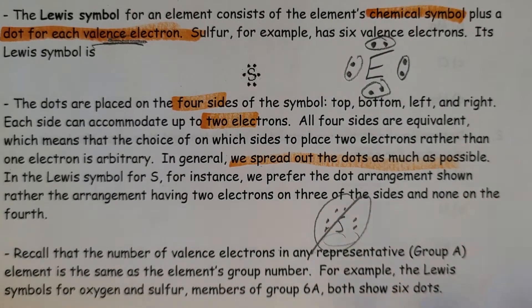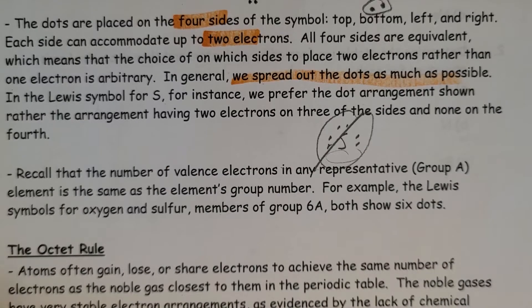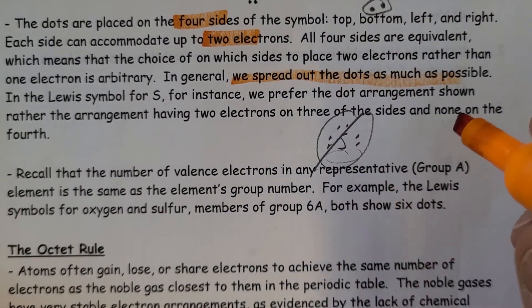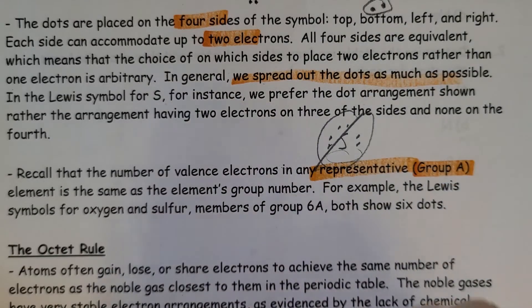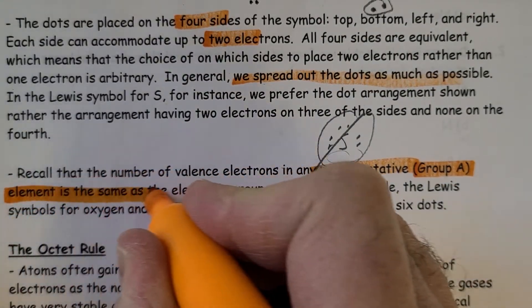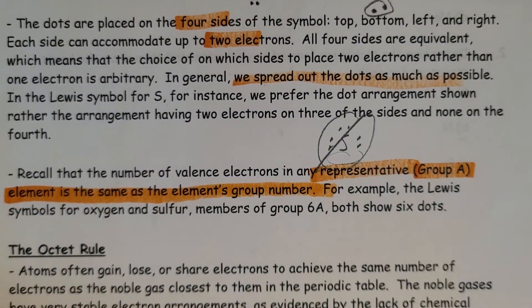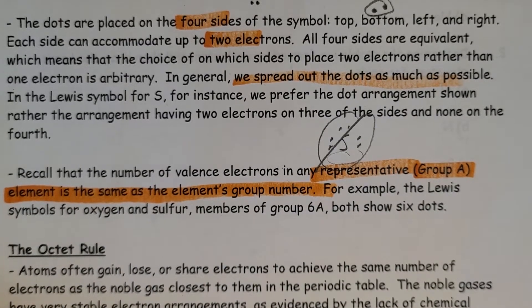Recall that the number of valence electrons in any Group A element, or representative group, is the same as the group number. For example, if we're looking at sulfur, it's in Group 6A, so it has six electrons.